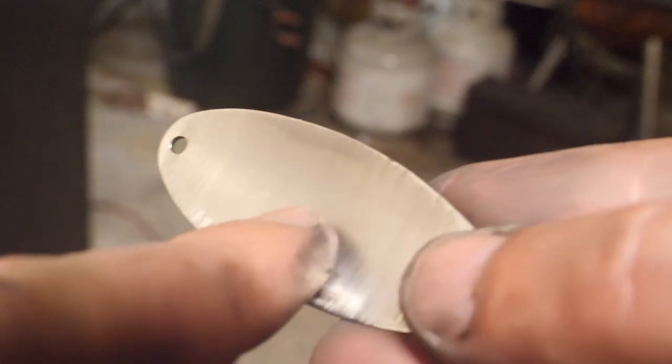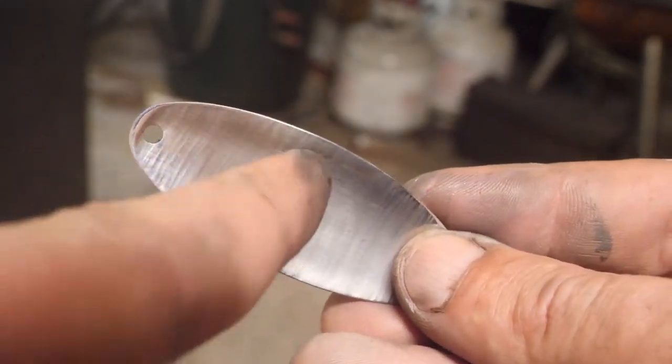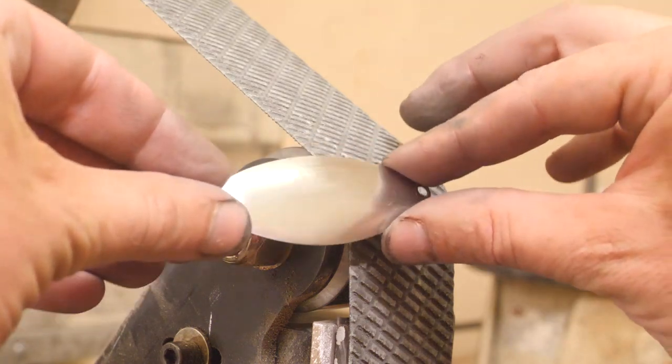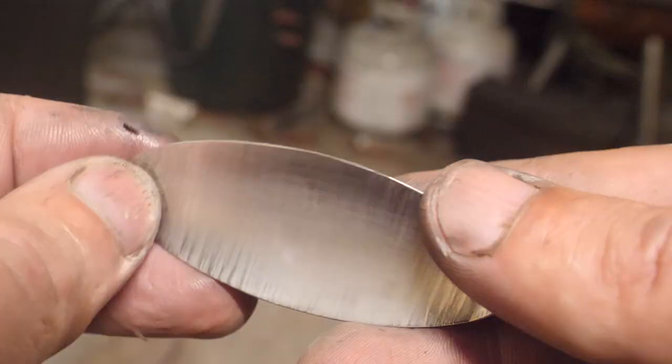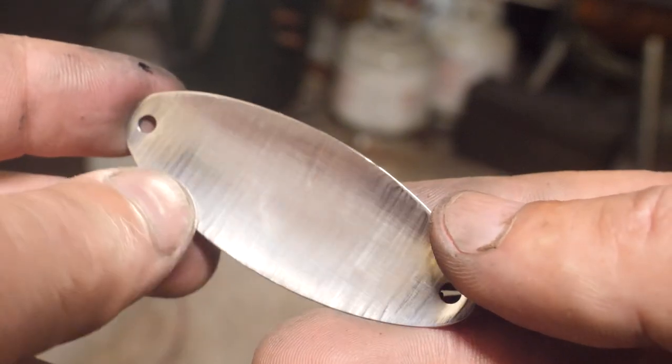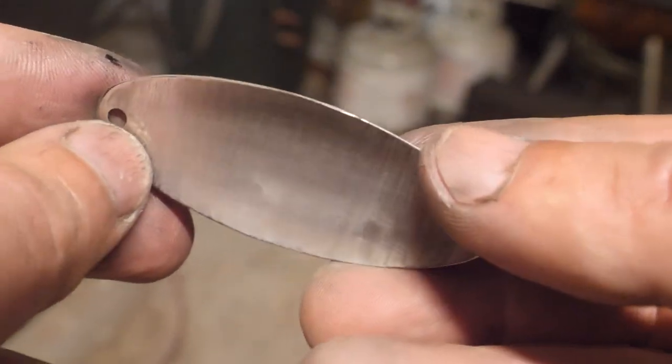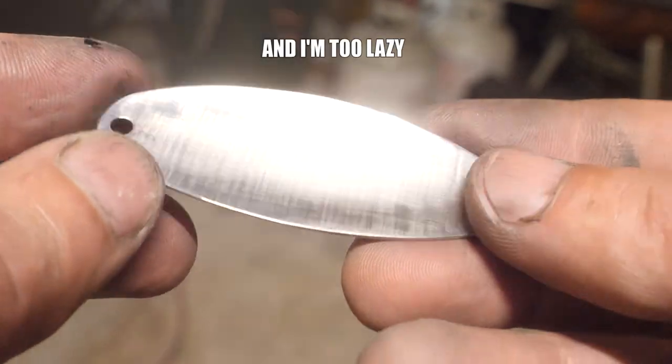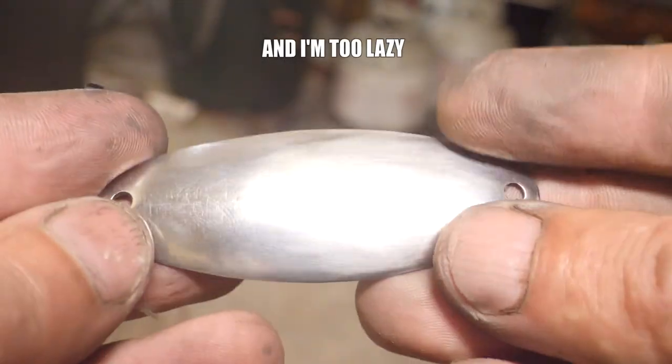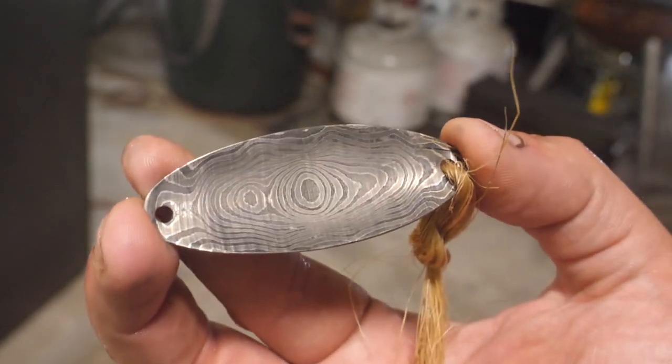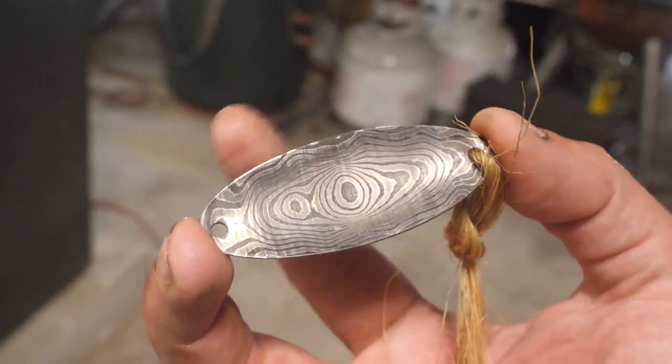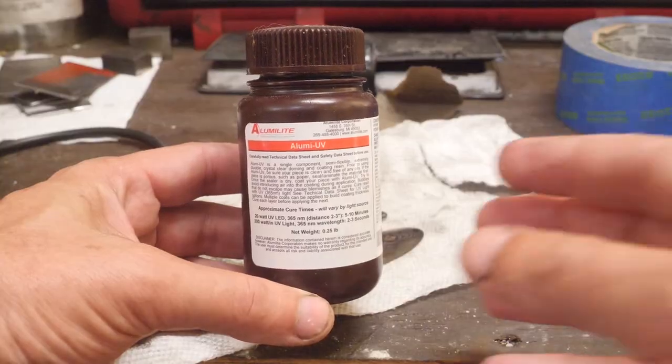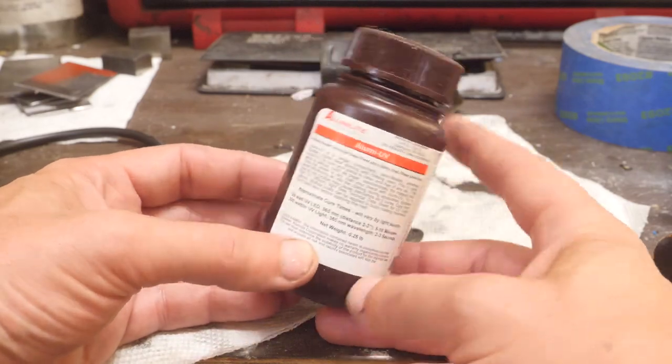So you can see these grinding ridges sort of going up and down here, and that's from the belt and sort of dragging it across the belt with uneven pressure. I could put on like a Scotch-Brite belt or something and get those out of there and sand them out, but I sort of like them there. I think it's gonna add to the effect, to be honest. We'll etch it and see what happens.